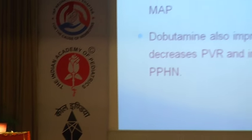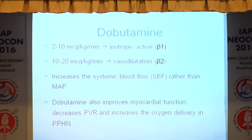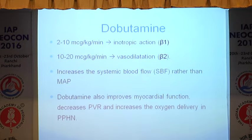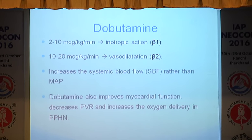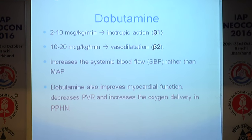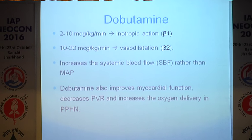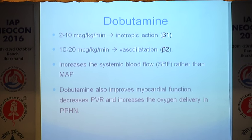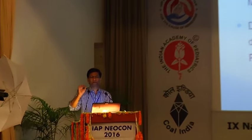Dobutamine in doses below 10 micrograms is a predominant inotrope, improving myocardial contractility. Beyond that, there is some ventricular vascular relaxation, giving an improvement in systemic blood flow. So it improves blood flow rather than increasing blood pressure. It also has some effects on pulmonary vascular resistance, so in cases of PPHN, dobutamine can have some effect and bring about improvement, especially if the patient is a little hypertensive.